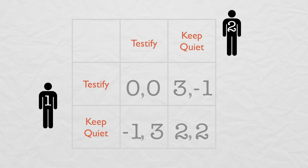If Prisoner 2 keeps quiet, Prisoner 1 is better off testifying. If Prisoner 2 testifies, Prisoner 1 is better off testifying. Testifying is a dominant strategy for both players, so both testifying is the dominant strategy equilibrium.